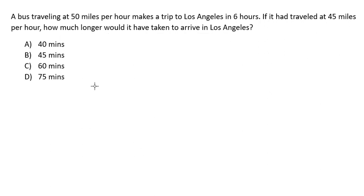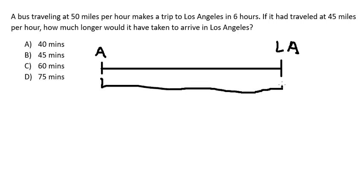The first thing I will do is draw a diagram. Let's say this is location A and this is Los Angeles. We know that we need to travel at 50 miles per hour for 6 hours to finish the distance from A to LA. The first thing we need to find is the distance.